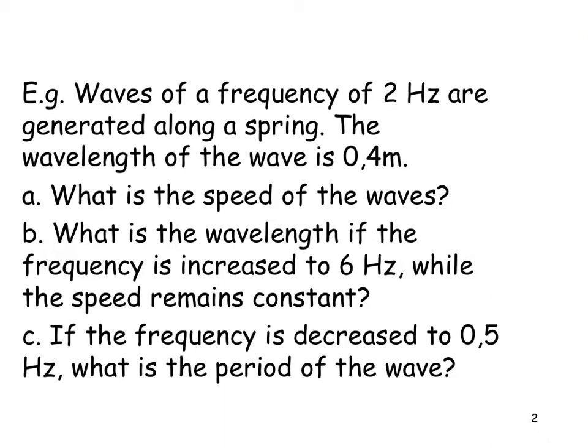So if we have waves of a frequency of 2 hertz, and they are generated along a spring, the wavelength of the wave is 0.4 meters. What is the speed of that wave? Well, you have got V is equal to lambda F, and lambda is 0.4. It must be in meters, and the frequency must be in hertz, and you land up with 0.8 meters per second.